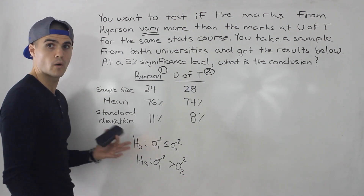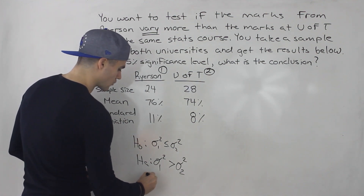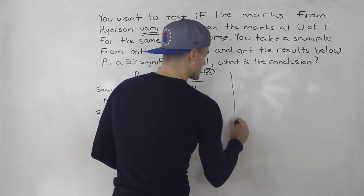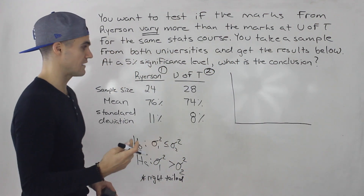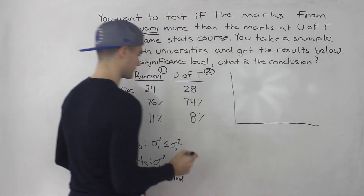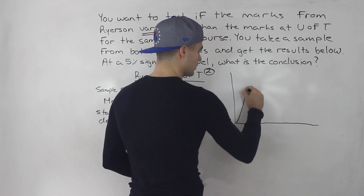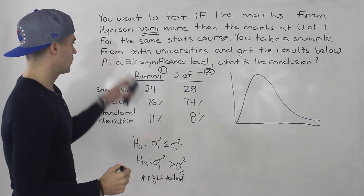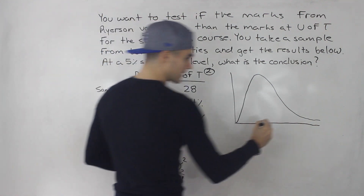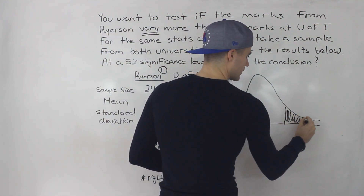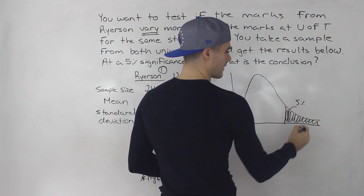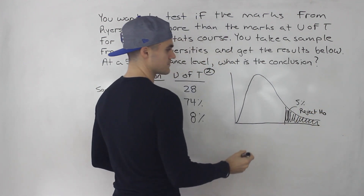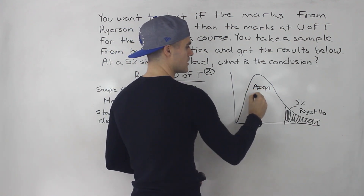Notice that we are dealing with a one-tailed test — more specifically, a right-tailed test. Since we are testing variances, we know we're going to be using the F distribution, as covered in the previous video. The F distribution looks something like that. We are testing at a 5% significance level, so the area in the right tail is 5%. This is the rejection region where we reject the null hypothesis, and the rest is where we accept the null hypothesis.